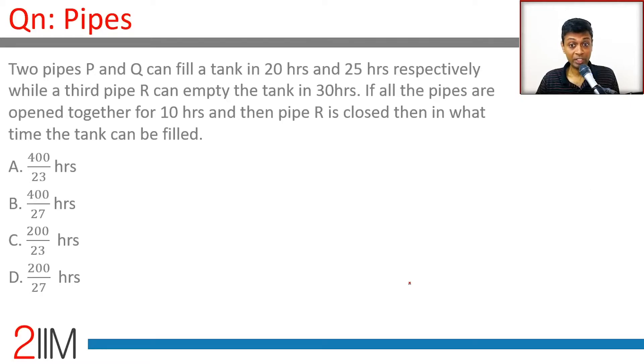Two pipes P and Q can fill a tank in 20 hours and 25 hours respectively, while a third one can empty it in 30 hours. If all the pipes are open together for 10 hours, then pipe R is closed, in what time can the tank be filled?